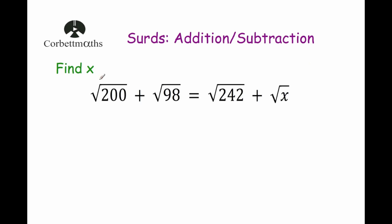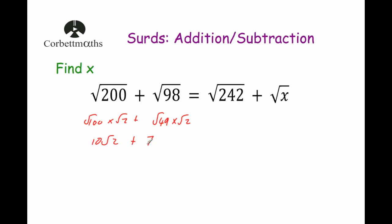Our last question — I really like this one. Find x, given that Root 200 plus Root 98 equals Root 242 plus Root x. Let's work out the left-hand side first. Root 200: well, 100 is a square number and a factor of 200, so that's Root 100 times Root 2 which is 10 Root 2. Root 98: we're dealing with Root 2s, so 2 times 49 gives Root 49 times Root 2, and the square root of 49 is 7, so that's 7 Root 2. Therefore 10 Root 2 plus 7 Root 2 equals 17 Root 2.